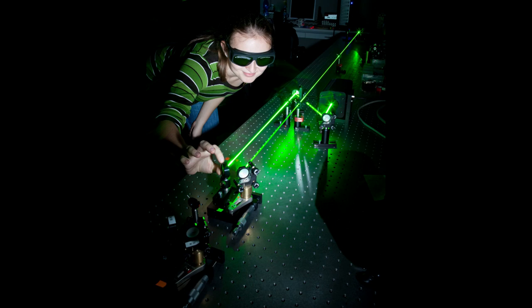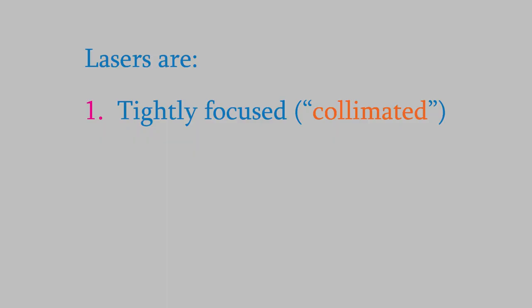A laser has three characteristics that make it different from other kinds of light source. First, it's very tightly focused or collimated. As we'll see soon, that's not just because there are lenses to focus the light.